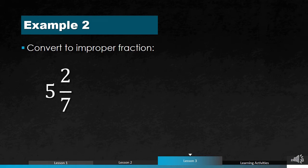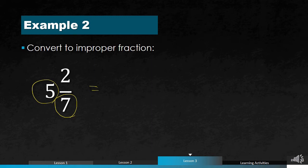For the next example, we have 5 and 2 sevenths, and we will convert this into an improper fraction. First, we multiply the denominator by the whole number: 5 times 7 gives you 35. Then we add 35 to 2: 35 plus 2 is 37. So the final answer is 37 over 7, where 37 is your numerator and 7 is the denominator.